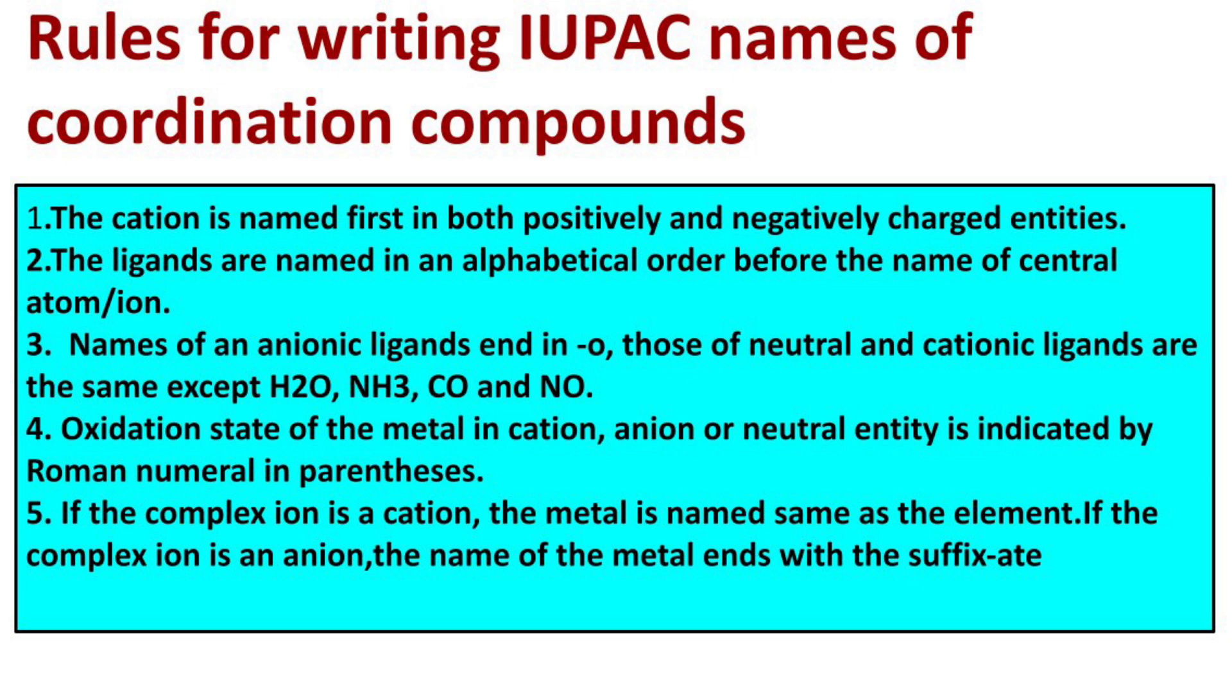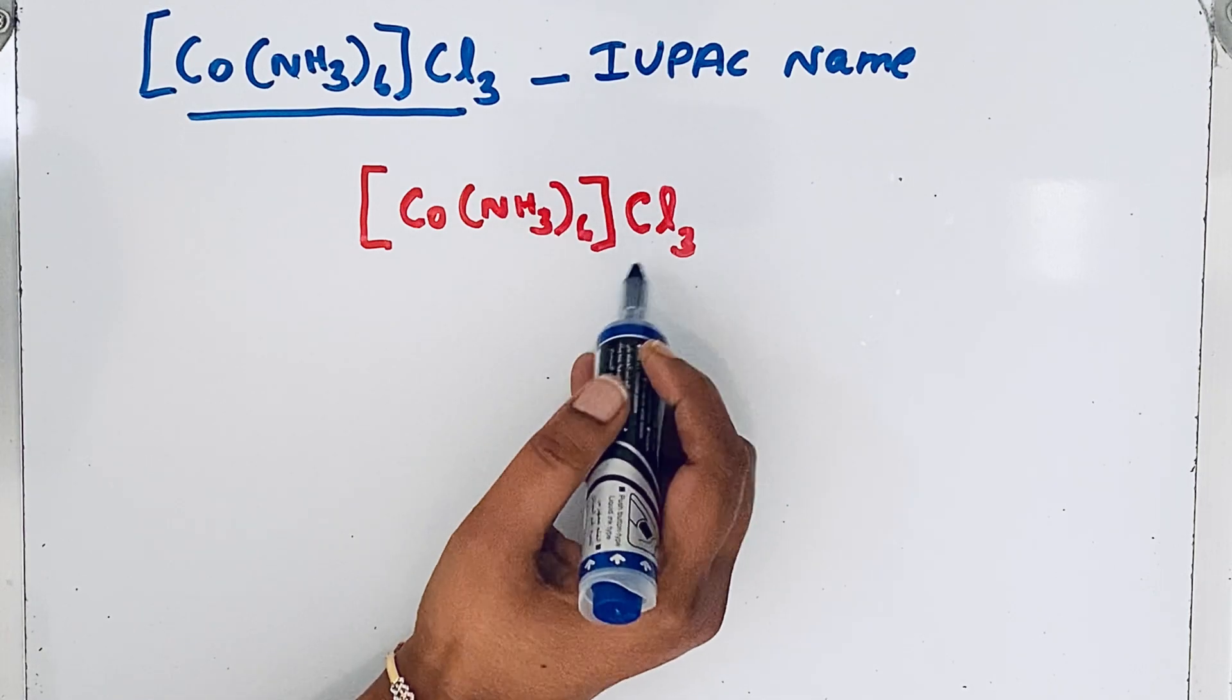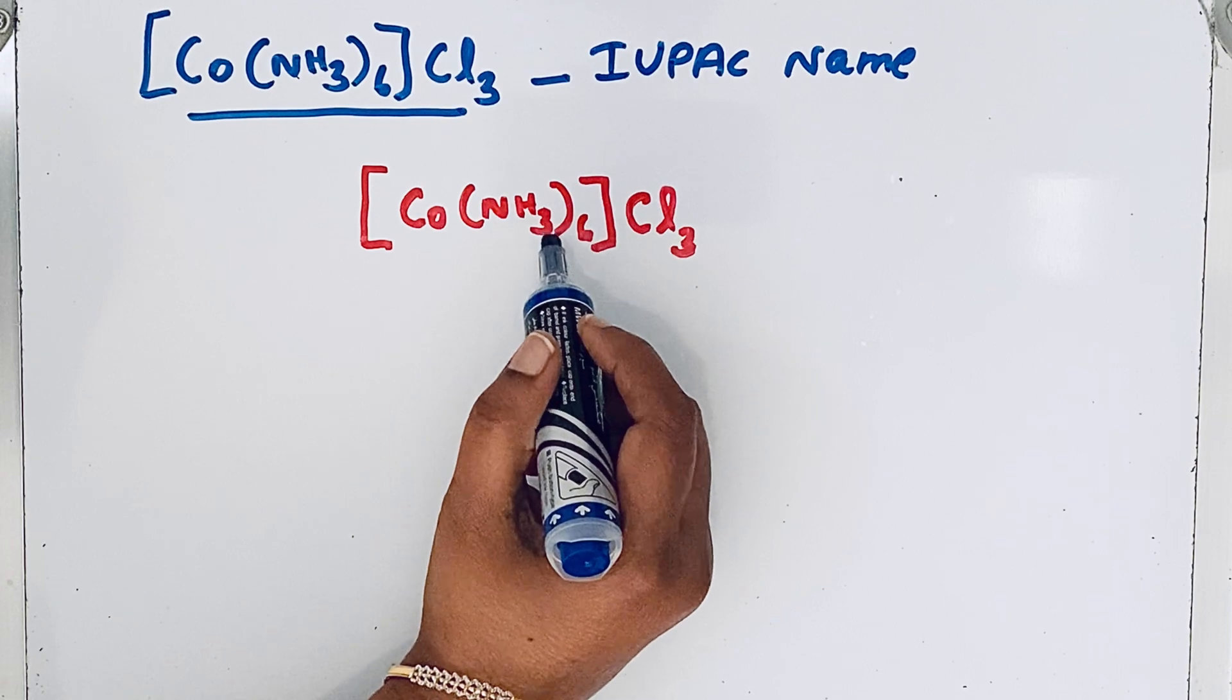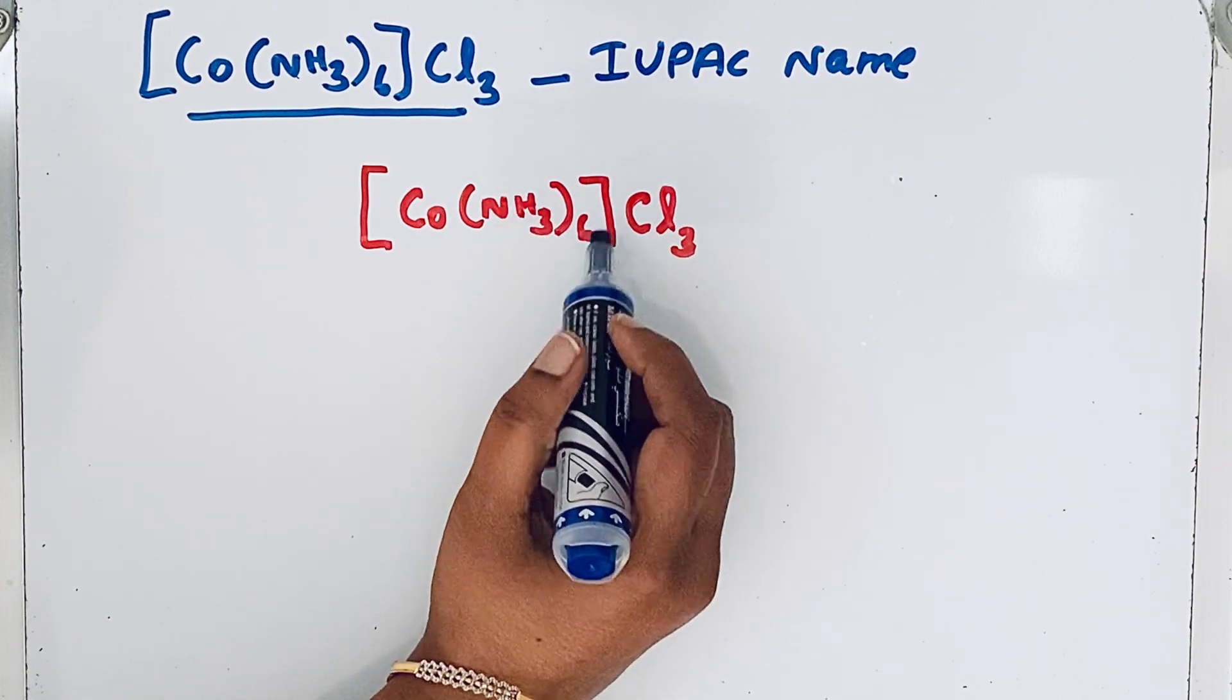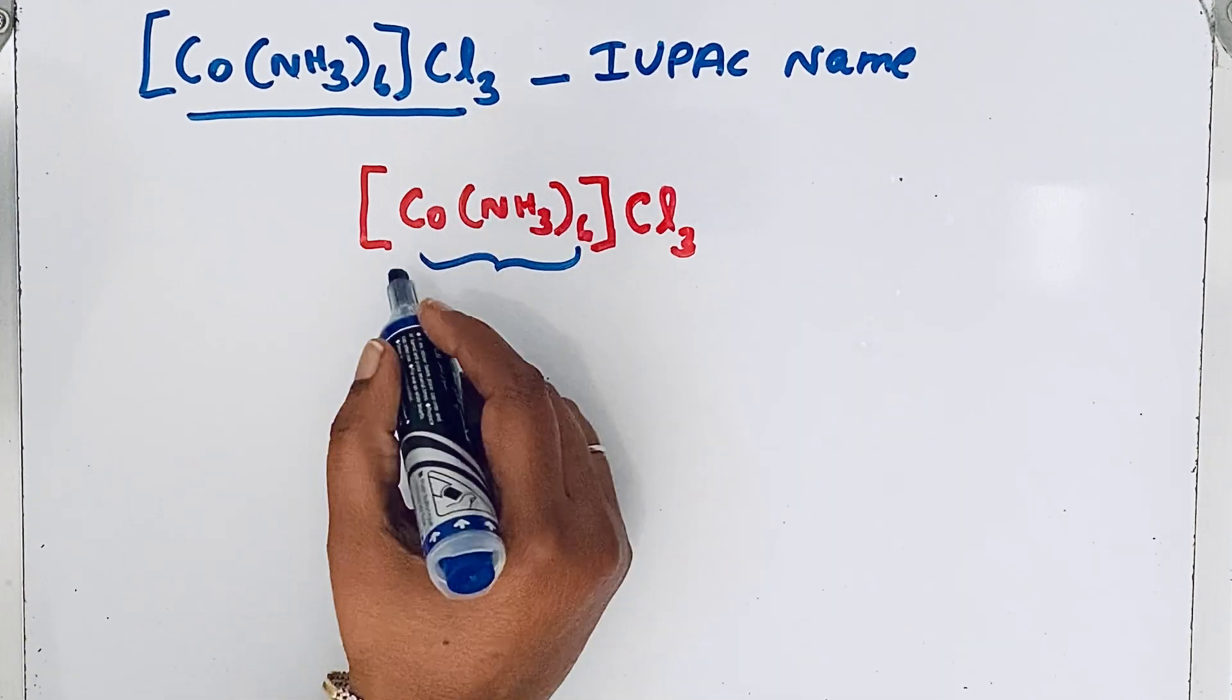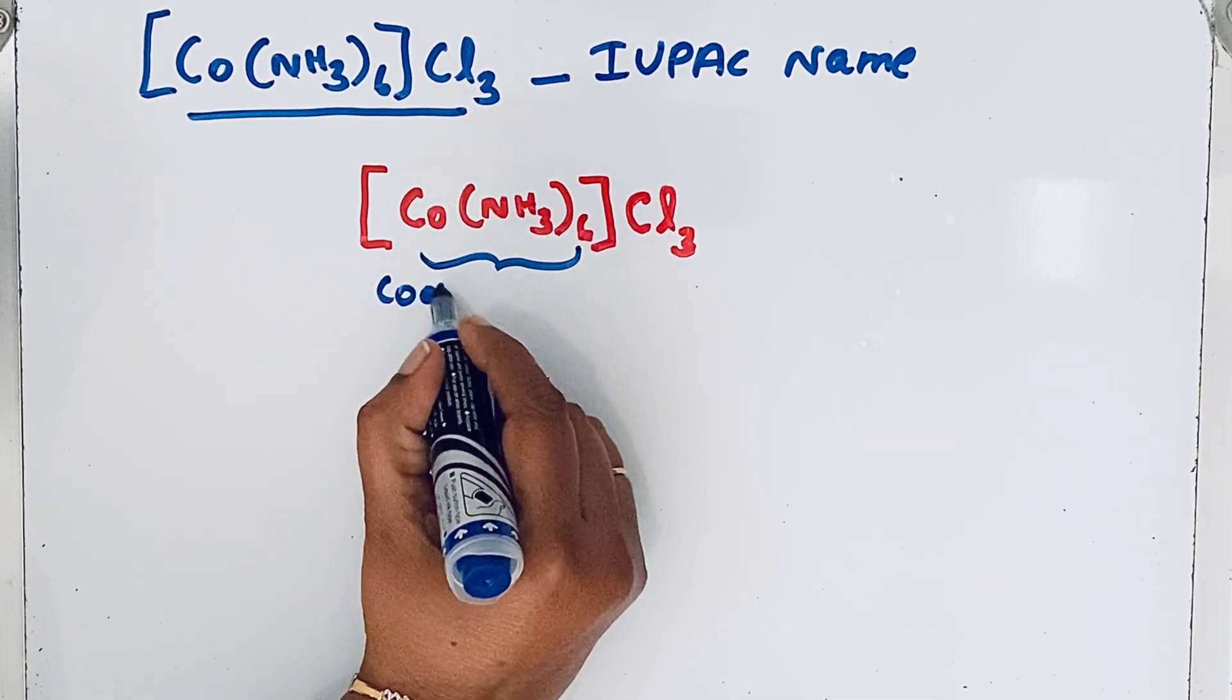If the complex ion is a cation, the metal is named same as the element. In this compound, first let us see some important terms. [Co(NH3)6] is enclosed in a bracket, so this is called the coordination sphere.